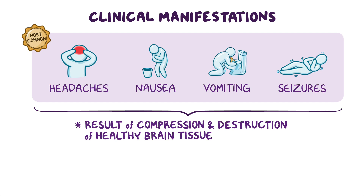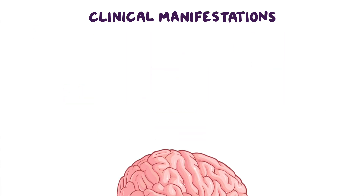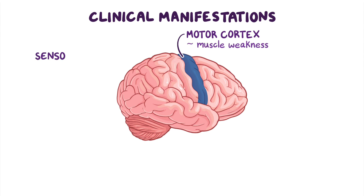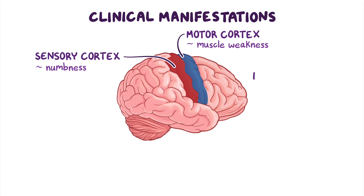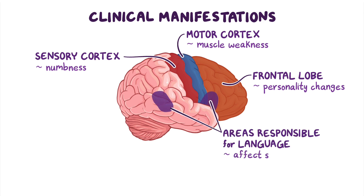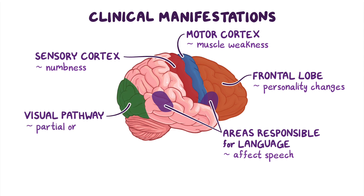Depending on the location of the tumor, there can also be specific neurological deficits. Involvement of the motor cortex can lead to muscle weakness. Involvement of the sensory cortex can lead to numbness or difficulty identifying objects through touch. Involvement of the frontal lobe can cause personality changes. Involvement of areas responsible for language can affect speech, and involvement of the visual pathway can lead to partial or full blindness.